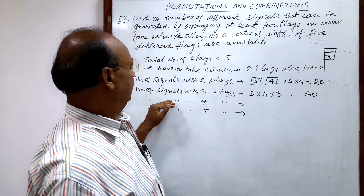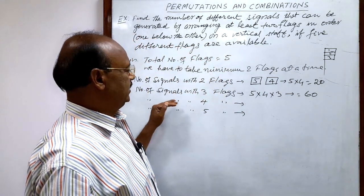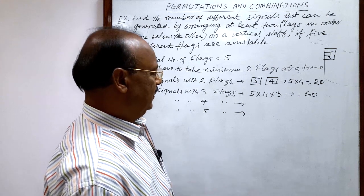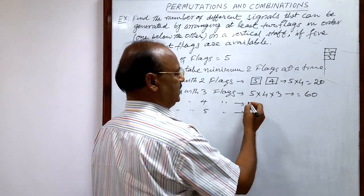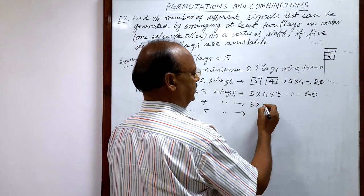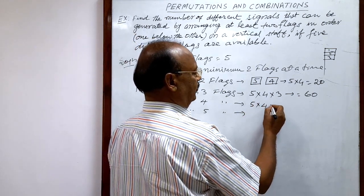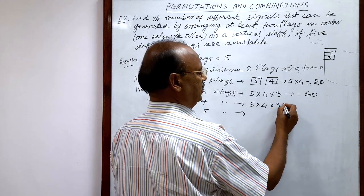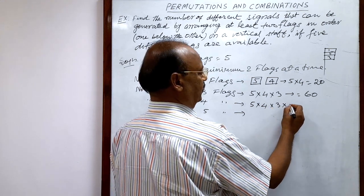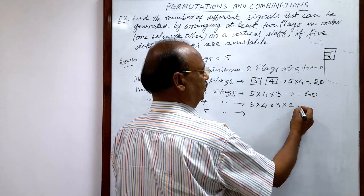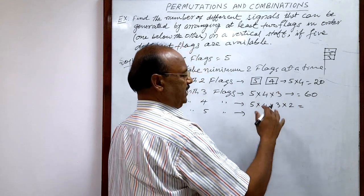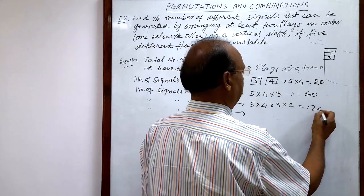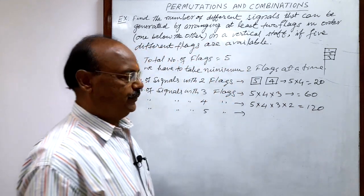If we have to make signals using four flags, the first flag is selected in five ways, the second in four ways, the third in three ways, and the fourth in two ways. So the total number of signals with four flags is 5 × 4 × 3 × 2 = 120.